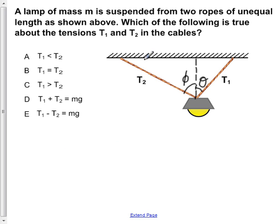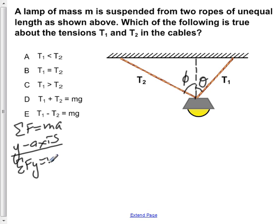Now in order to compare T1 and T2, we have to apply Newton's second law. The net force is equal to ma. If we apply it for the y-axis, we would have the sum of the y-components equal to the mass times the acceleration in the y-direction. But this object is in equilibrium. It's not moving, so we know it's not accelerating up or down. So Ay is equal to zero.